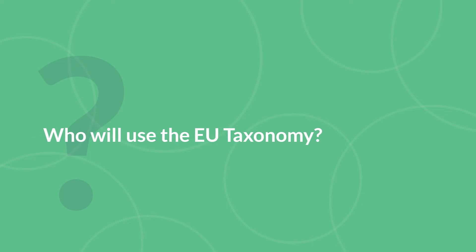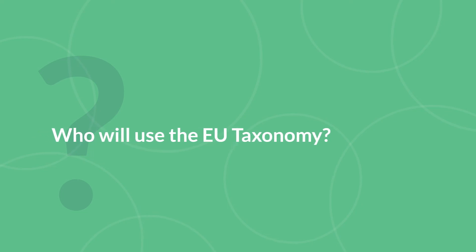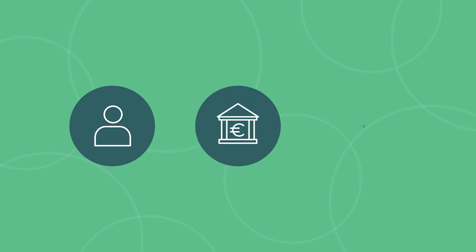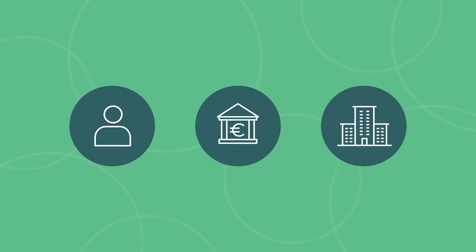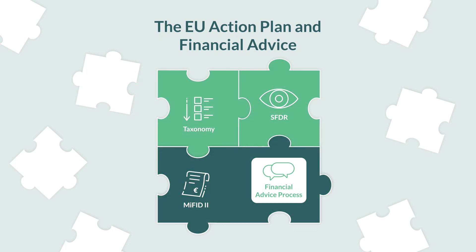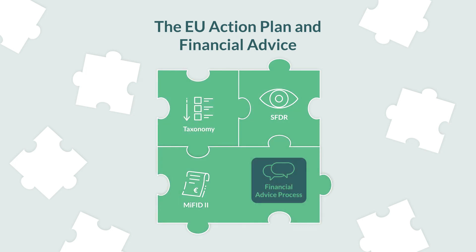Who will use the EU Taxonomy? It is used, for example, by portfolio managers, banks, insurance companies, or companies obliged to report on sustainability. The EU Taxonomy thus creates a common language that serves as the basis for other key initiatives in the EU Action Plan.